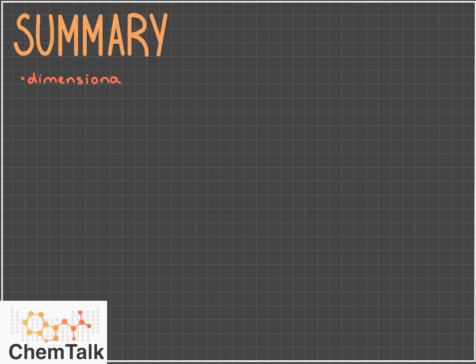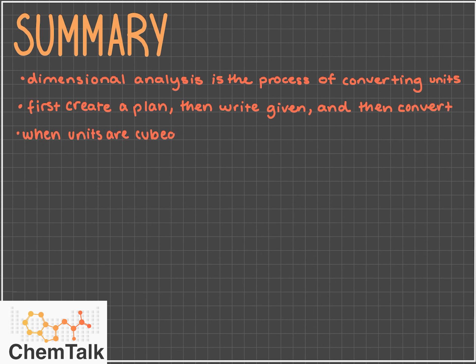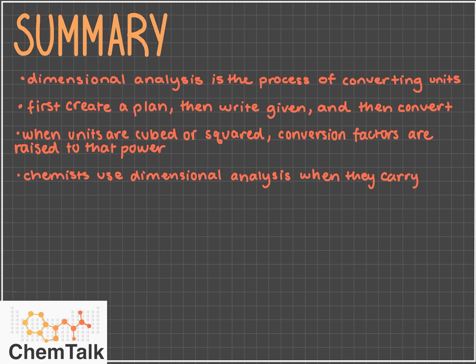Now, before you go, let's recap what we covered in today's lesson. Dimensional analysis is the process of converting units. When we're using dimensional analysis, we first want to create a plan of what units to convert to, then write our givens and convert. And when our units are cubed or squared, our conversion factors are also raised to that power. Chemists use dimensional analysis when they carry out experiments, in order to effectively measure substances or convert them into a different unit.